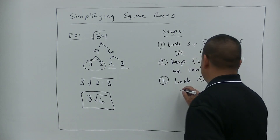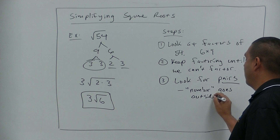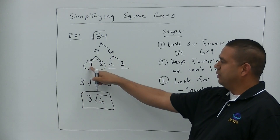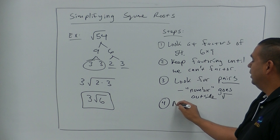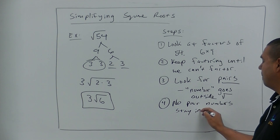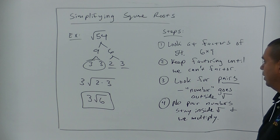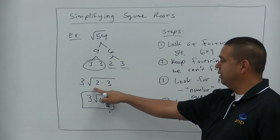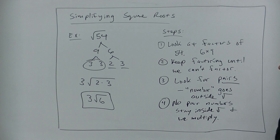So we look for pairs, and then the number goes outside the square root. A pair of 3s — that number is 3, so we put a 3 outside, because 3 times 3 is 9 and the square root of 9 is 3. The no-pair numbers stay inside. 2 and 3 didn't have a pair, so we multiply those inside the square root and we get 3 square root of 6. So the square root of 54 is equivalent to 3 times the square root of 6.